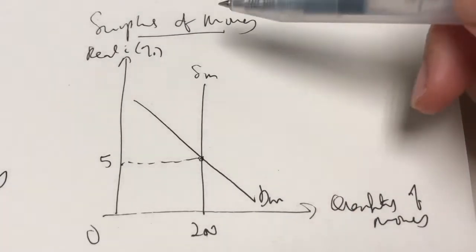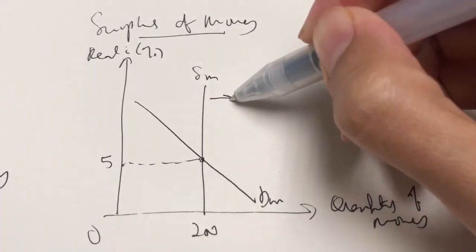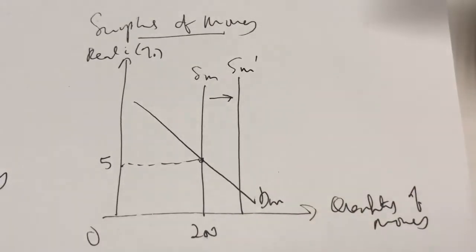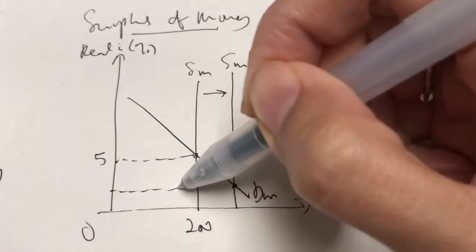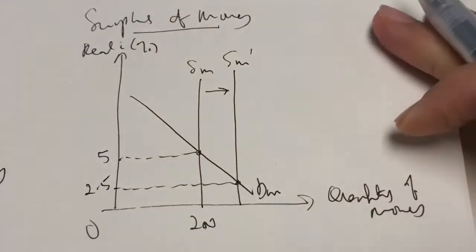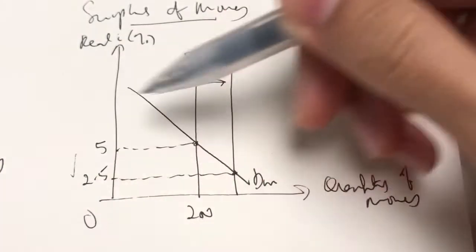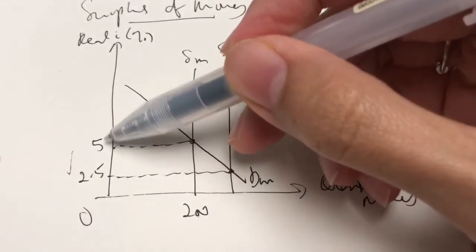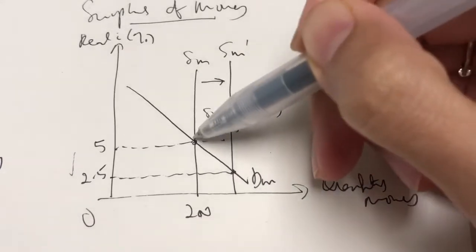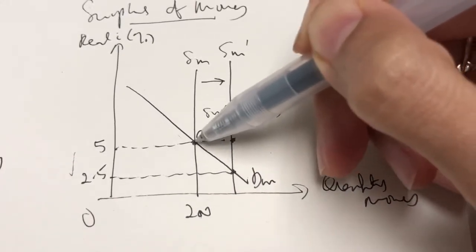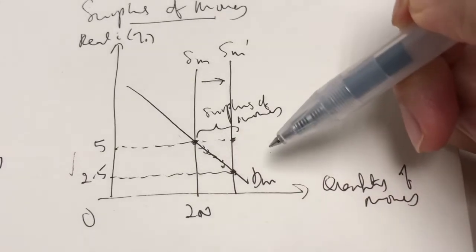Now let's sketch the situation where there's a surplus of money — that means the supply of money increases, so the supply of money shifts to the right. This leads to a fall in the interest rate at the new intersection point. We have a new equilibrium interest rate, let's say at 2.5%. At the existing interest rate of 5%, there is a surplus of money — more supply compared to demand — so there will be a downward pressure for the interest rate to come to a new equilibrium.